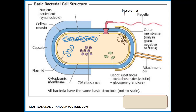Outside the cell wall, flagella are present. The flagella mainly help in motility of the bacteria. In addition to flagella, pili — tube-like structures — are present. The pili mainly help in reproduction of bacteria, such as in the conjugation mechanism, where one bacterium attaches to another bacterium with the help of pili. This is the basic structure of the bacterial cell.